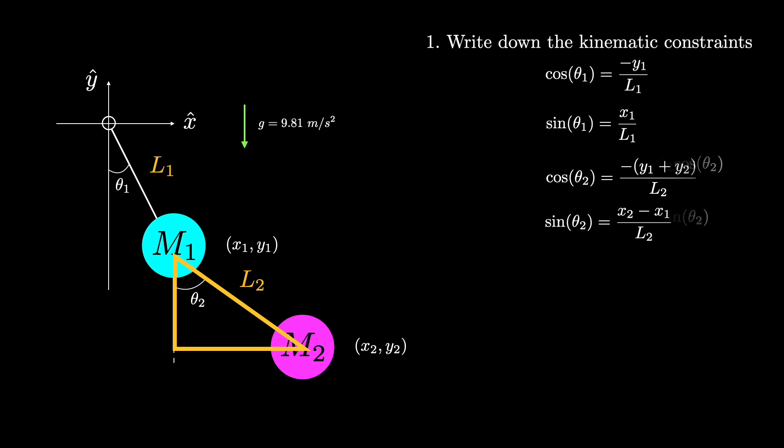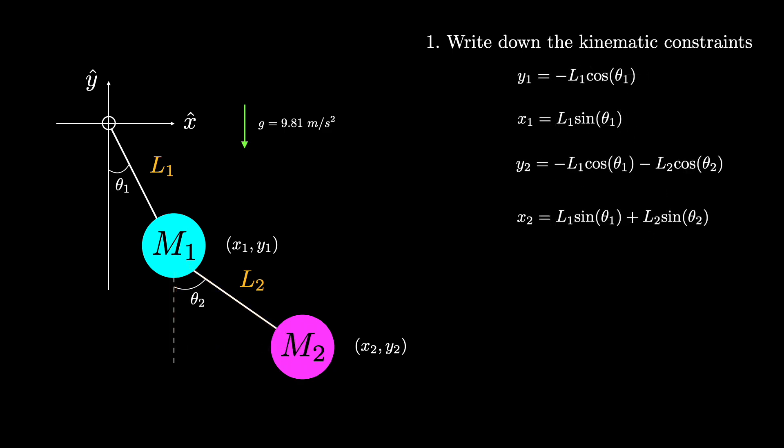Then, doing some slight rearranging, we now have an expression for x1, y1, x2, and y2. We'll also need a similar expression for velocities when we write down the kinetic energy in the Lagrangian. We can find that by just taking the derivative with respect to time of each coordinate.